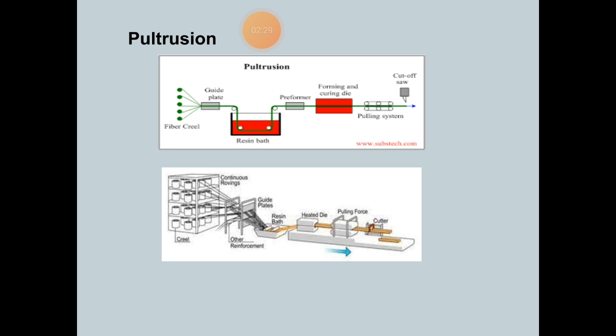The components of the pultrusion process are: fiber creels, preform, pulling mechanism, cut-off saw, heated die, and resin impregnation system.